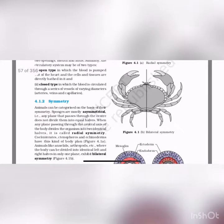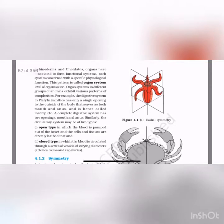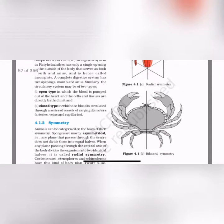For example, a crab has bilateral symmetry — it can be divided into two equal halves only when cut exactly in the center. Radial symmetry is like a round cake — if you cut it in whatever plane, you get equal halves. With only one plane giving equal halves, we call it bilateral symmetry.